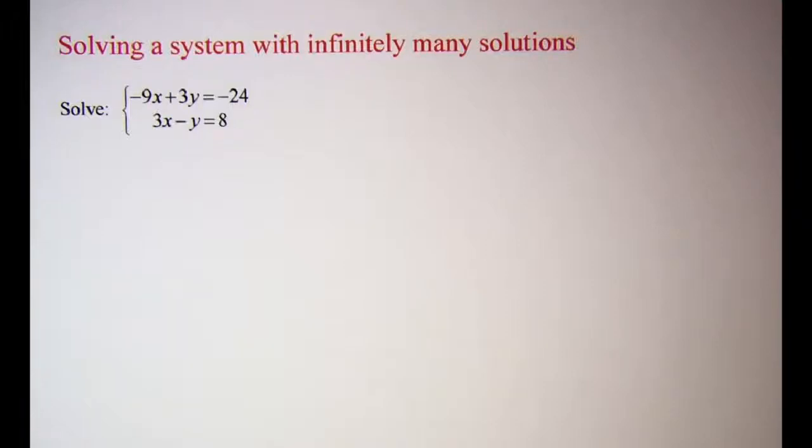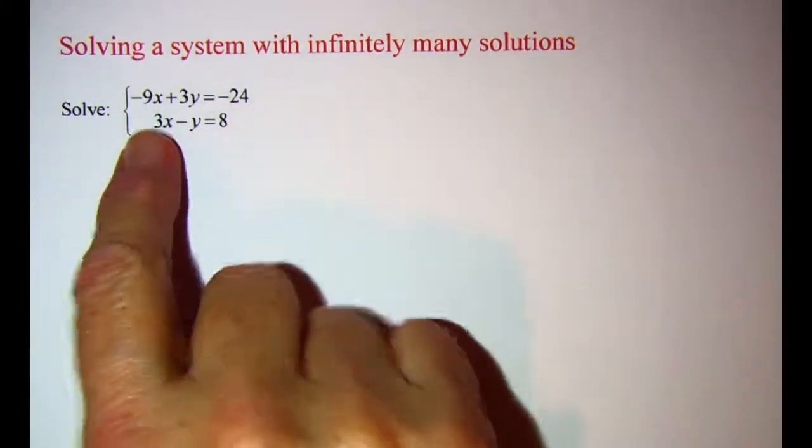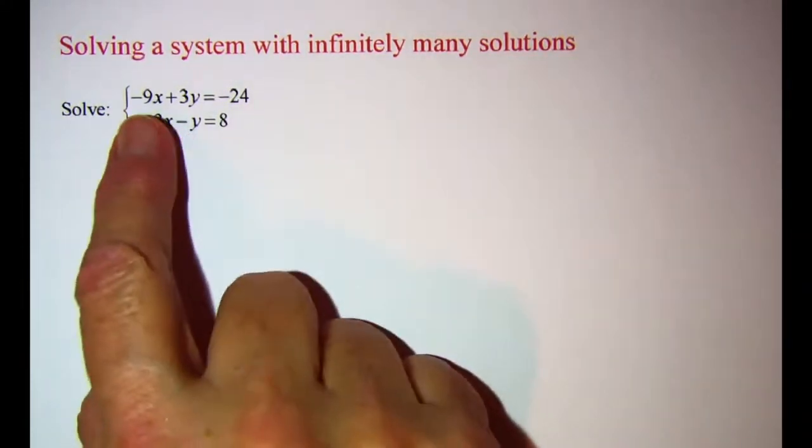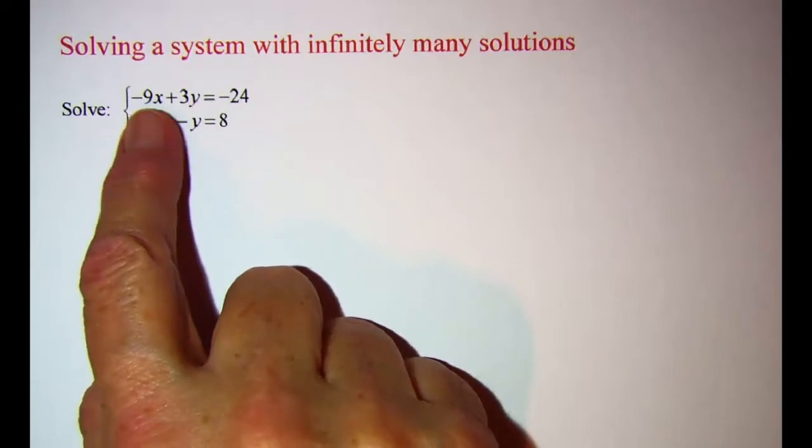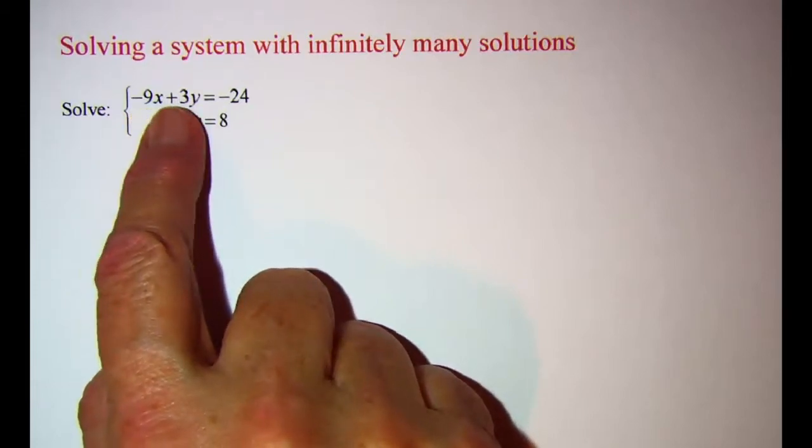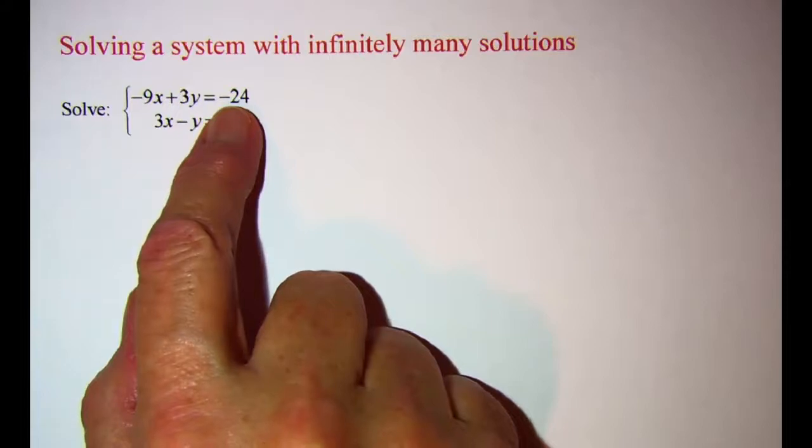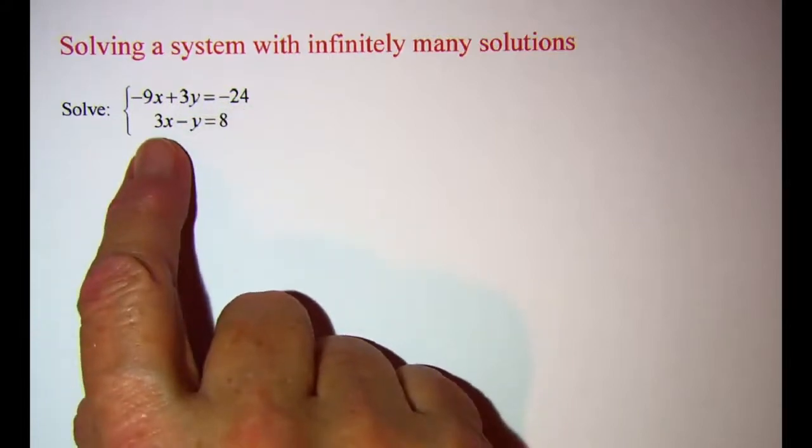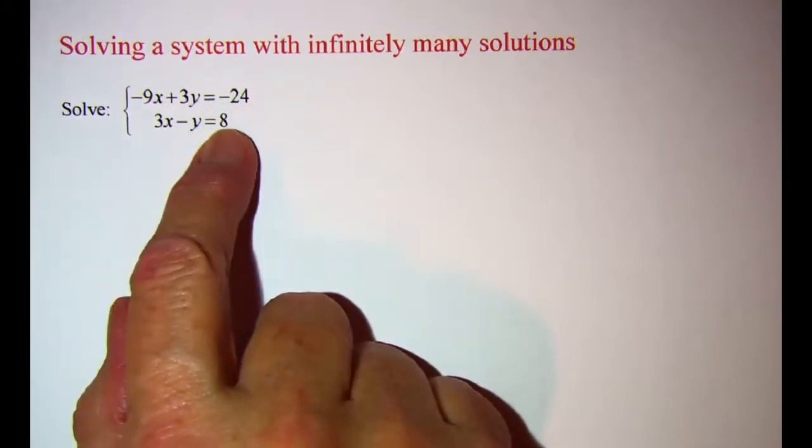In this video, we'll be solving a system with infinitely many solutions. The example that we'll be working with is the system that contains the equation negative 9x plus 3y equals negative 24, and 3x minus y equals 8.